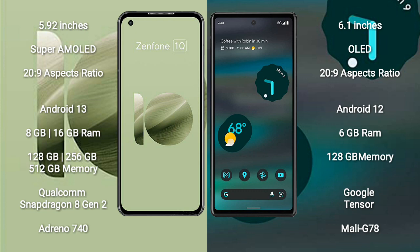Asus Zenfone 10 runs on the Android 13 operating system. Google Pixel 6a runs on the Android 12 operating system. Asus Zenfone 10 comes with 8GB or 16GB RAM and 128GB, 256GB, or 512GB internal storage.